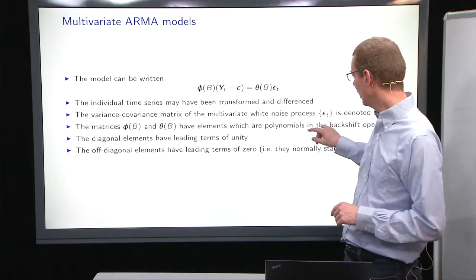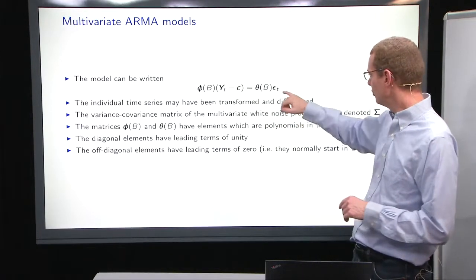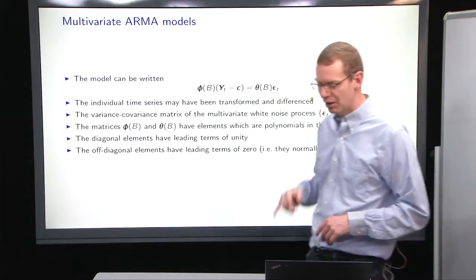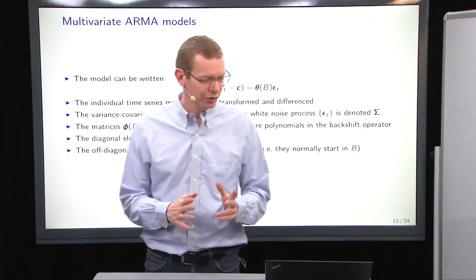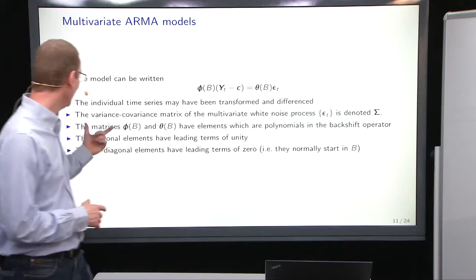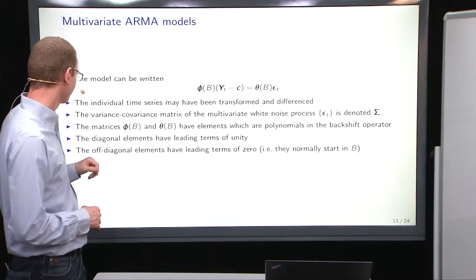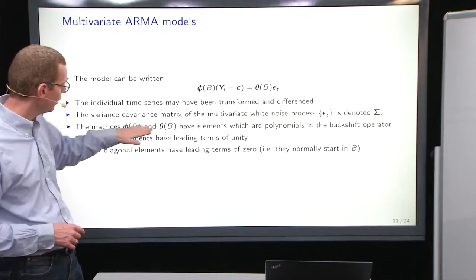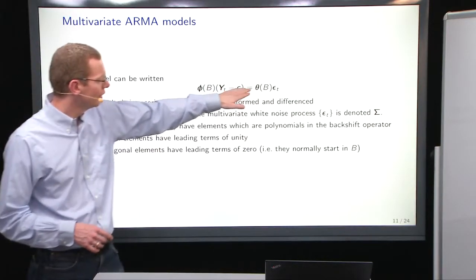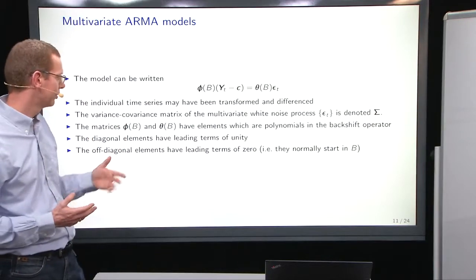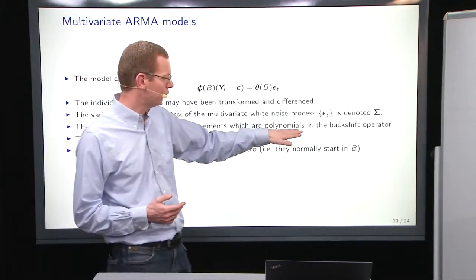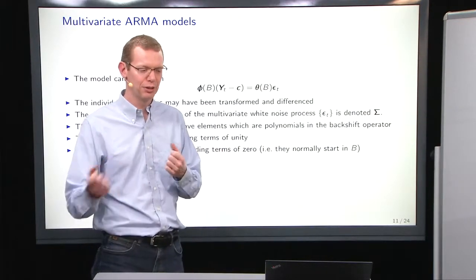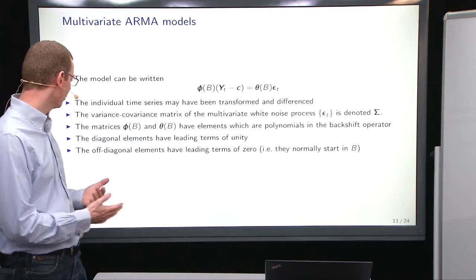So you also have the noise process here. It can be multivariate white noise process, which means that it can have a variance-covariance as well. And of course, it's kind of obvious that the phi and the theta polynomials here, they will have matrices with polynomials in the backward shift operator. Multiply two of them up to the order that you have.